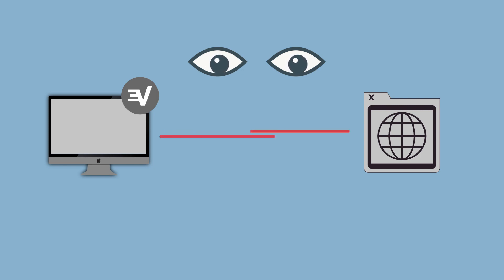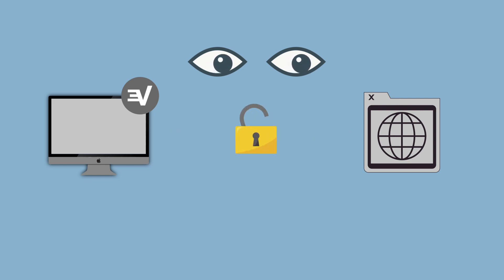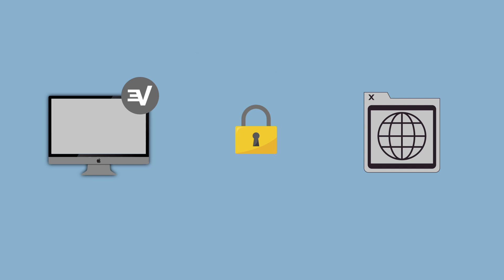Network Lock, also known as a kill switch, is designed to stop all web traffic from entering or leaving your Mac if you are suddenly disconnected from a VPN server, protecting your privacy.